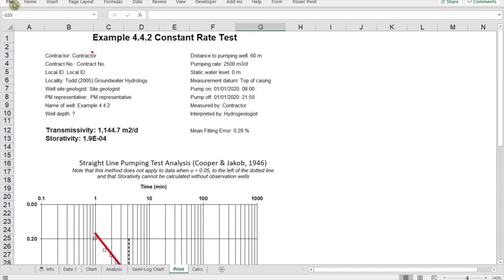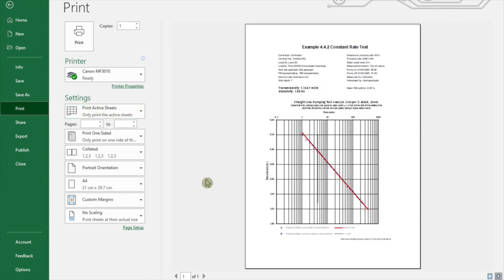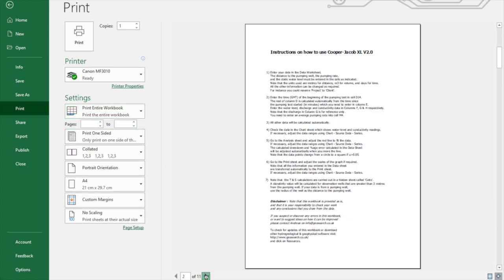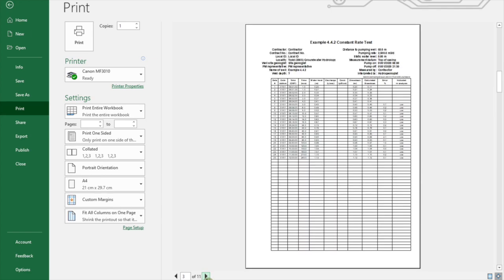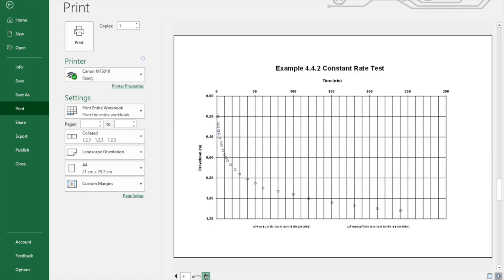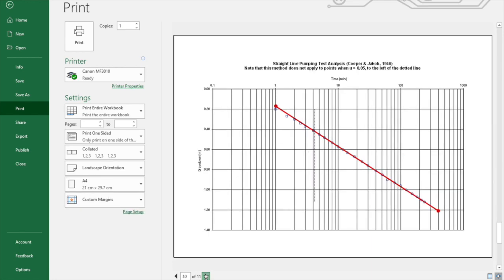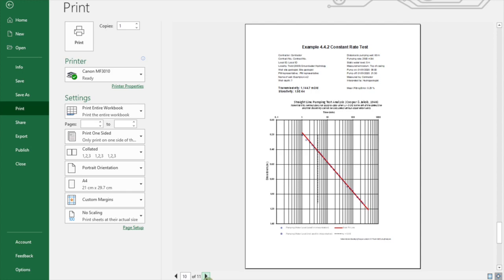Then all you do is file print, and we can print an entire workbook if you like here. Obviously don't print my instructions, but here is our data sheet, empty cells, and here is our chart, our calculations, our semi-logarithmic plot, and the final plot. So normally I would just give to the client the final plot here and the data sheet so that we're working in a very transparent way and they can see exactly how we derived our transmissivity and storativity values.